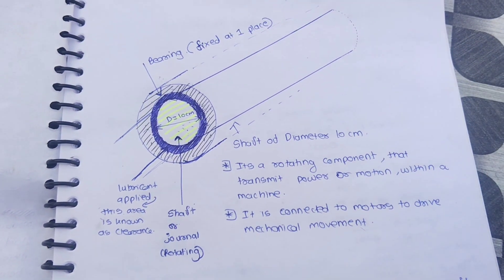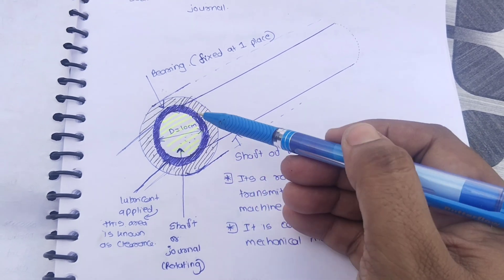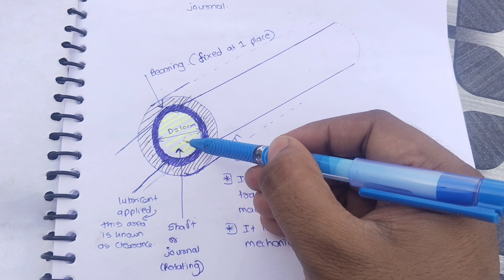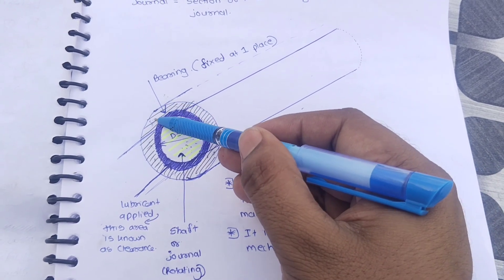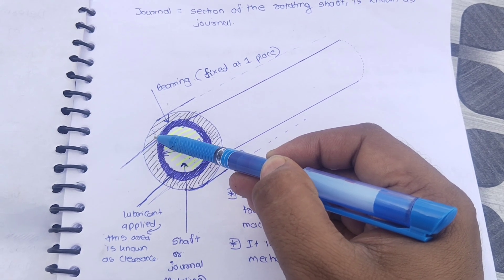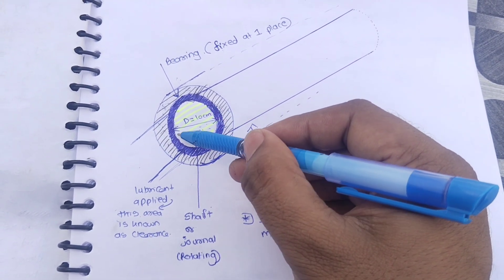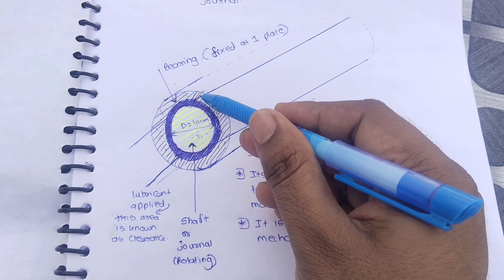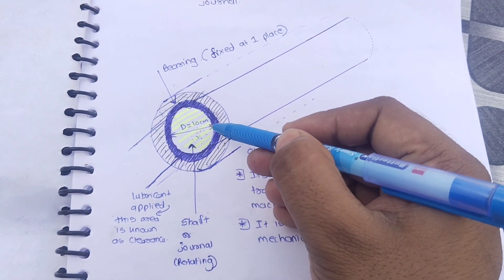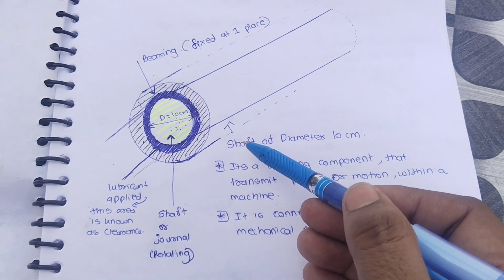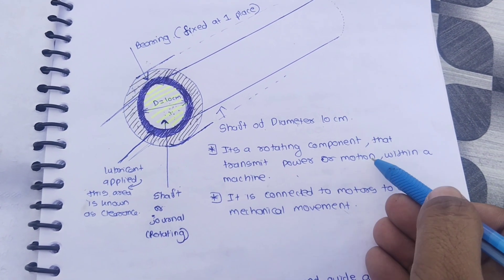The area marked in black pen is the bearing. This is a journal bearing — the journal or shaft is the rotating component, and the bearing surrounds it. The clearance area lies between them. The shaft has a diameter of 10 centimeters and is the rotating component that transmits power or motion within a machine, connected to motors to drive mechanical equipment.